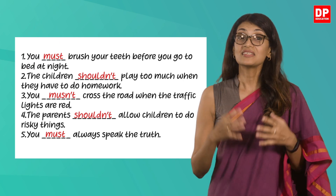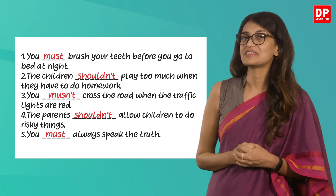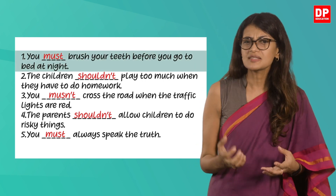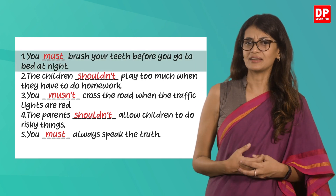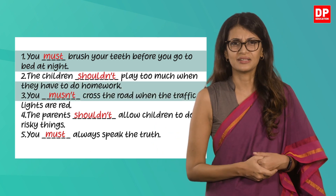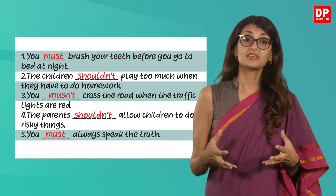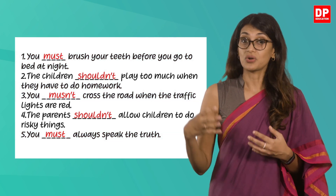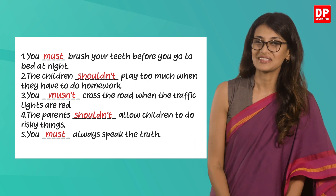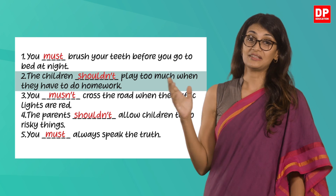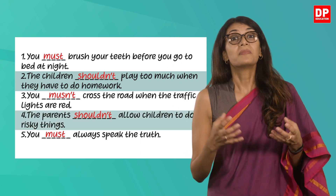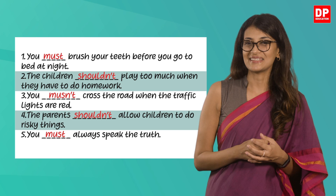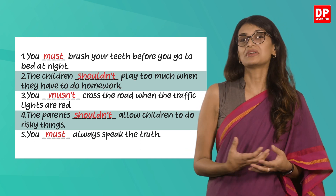If you noticed, in the sentences where must was used the ideas presented are done so most strongly — you can almost imagine the firm tone. You must brush your teeth before you go to bed at night. You mustn't cross the road when the traffic lights are red. You must always speak the truth. These sentences show what has to be done. The sentences where should or shouldn't has been used are mere recommendations — for example, the children shouldn't play too much when they have to do homework, and the parents shouldn't allow children to do risky things. Both those sentences are recommendations to parents on how to bring up their kids.